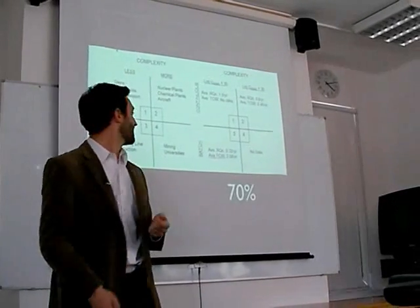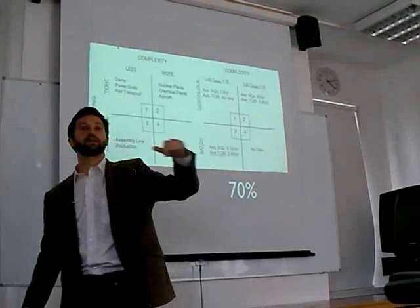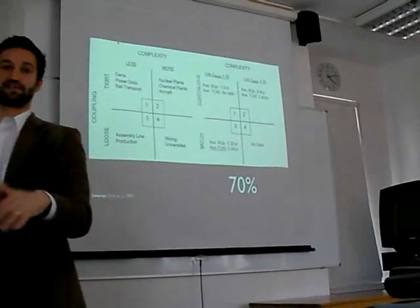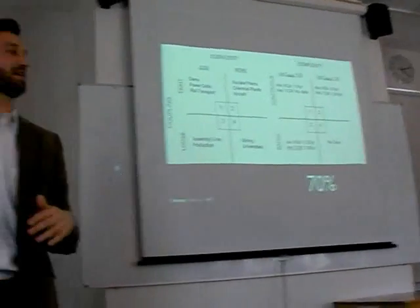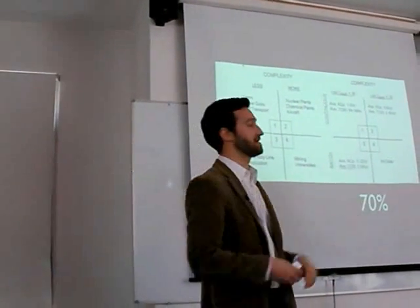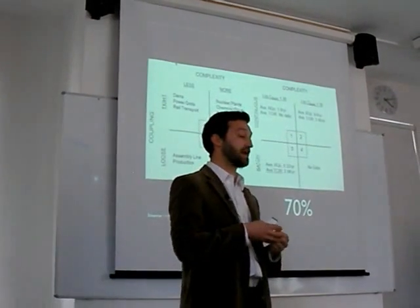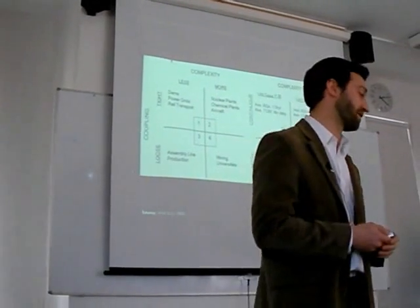Now the other interesting thing that came out of this study is that 70% of the catastrophic accidents occurred in companies that were having poor financial performance over the period of the study, right? So people sort of putting off maintenance, putting off safety protocols, doing shorter shifts, perhaps, etc., which increases the probability of an accident occurring.